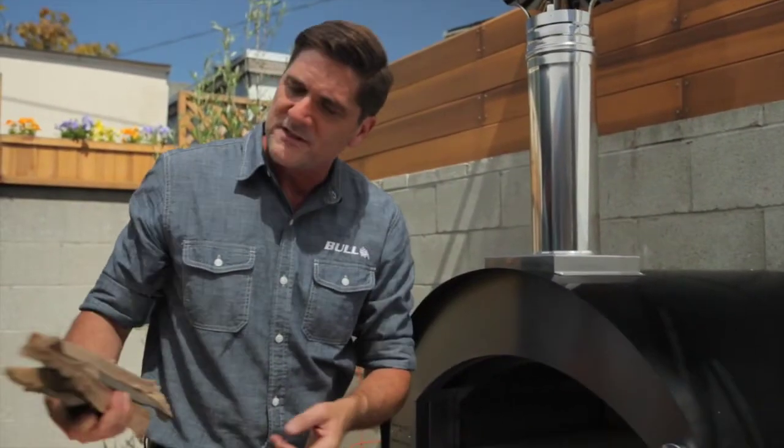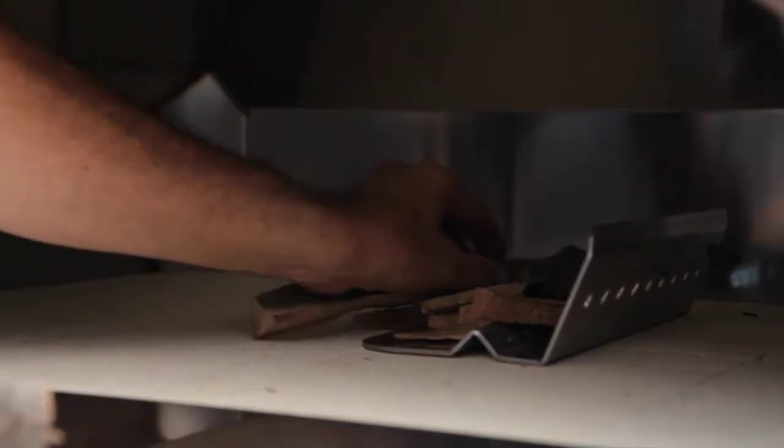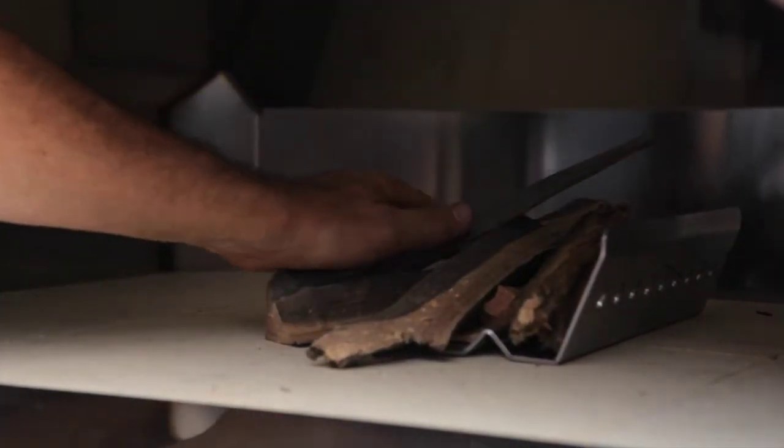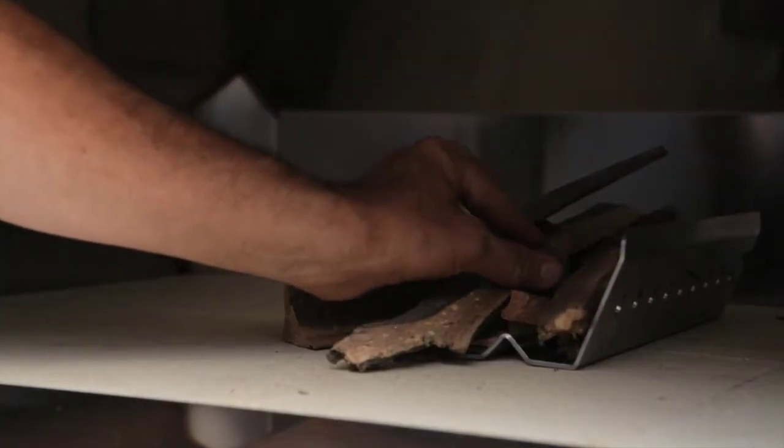Next, I take a few smaller wood chunks and lay those across the caddy. Then I've got four pieces of kindling here—three or four pieces will do. Just build yourself a little campfire. Then take two or three fire starters and nestle them underneath the kindling.